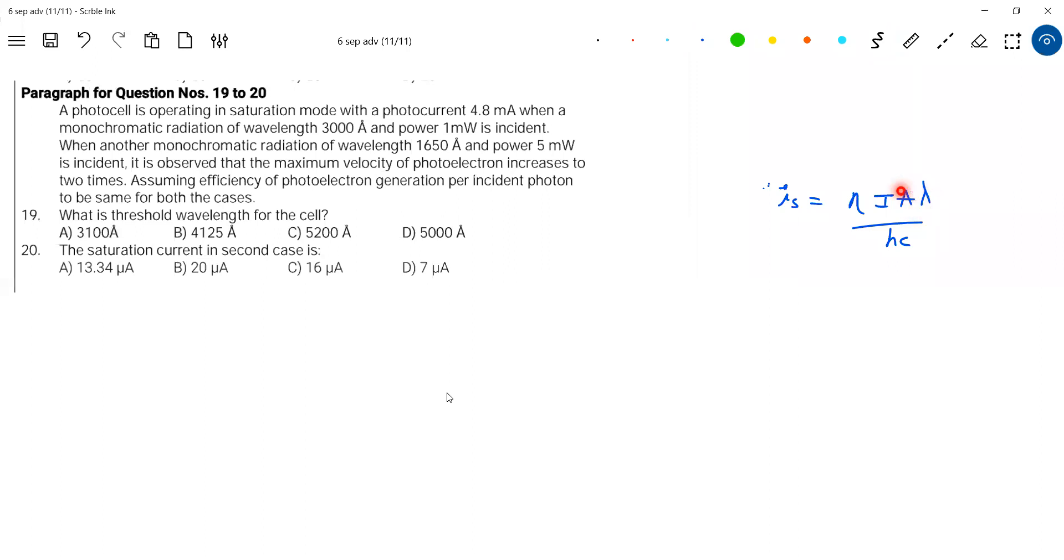From the saturation current, you can calculate the number of photoelectrons ejected. So this eta has to be calculated. How to calculate this? I think I'm confusing you. Let me put it differently. Number of photons incident equals power of source divided by energy of photon. Power of source given 1 milliwatt and 3000 Angstrom will give you number of photons incident.